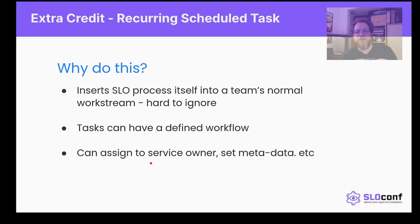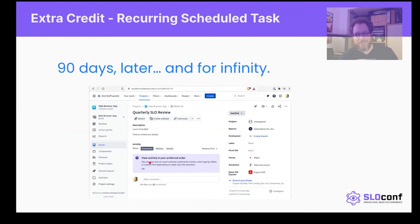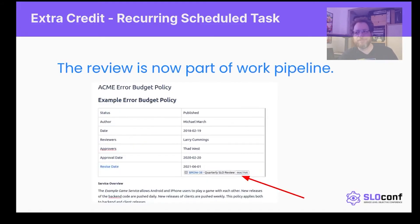These tasks can have a defined workflow — if you want certain people to approve steps, it can all be in that task — and the task can have a service owner, due date, and whatever else you need. We're going to set up a Jira automation — or another platform — scheduled to create an SLO-type task in a participating project every 90 days. You'll see it creates one of these tasks every 90 days into the future, and we're going to embed that task link back into the document so it acts as the enforcer.